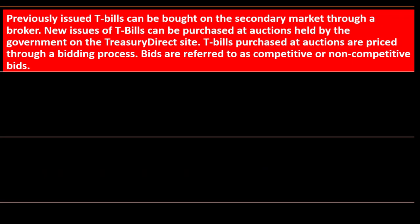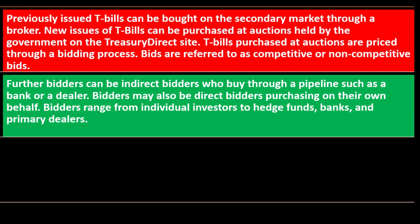Purchasing T-bills: previously issued T-bills can be bought on the secondary market through a broker. New issues of T-bills can be purchased at auctions held by the government on the TreasuryDirect site. T-bills purchased at auction are priced through a bidding process. Bids are referred to as competitive or non-competitive bids. Further, bidders can be indirect bidders who buy through a pipeline such as a bank or dealer, or direct bidders purchasing on their own behalf. Bidders range from individual investors to hedge funds, banks, and primary dealers.